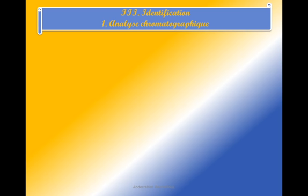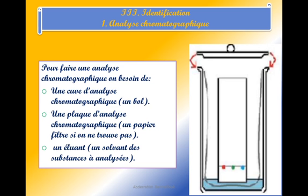Identification. Analyse chromatographique. Pour faire une analyse chromatographique, on a besoin d'une cuve d'analyse chromatographique — un bol —, d'une plaque d'analyse chromatographique ou d'un papier filtre, et d'un éluant solvant des substances à analyser.